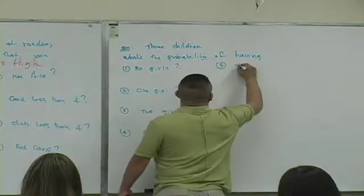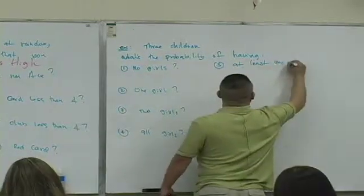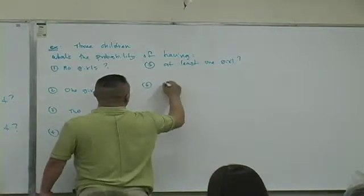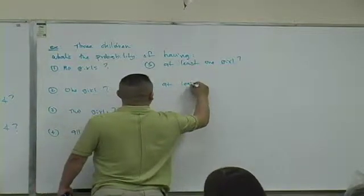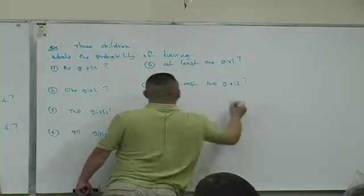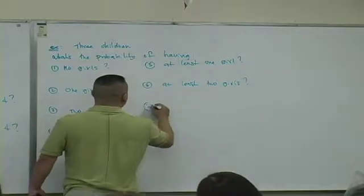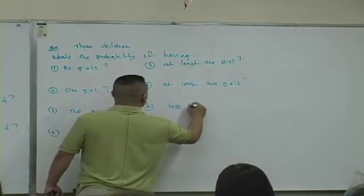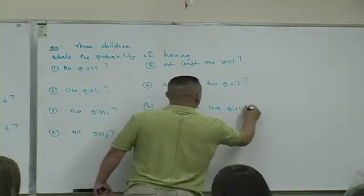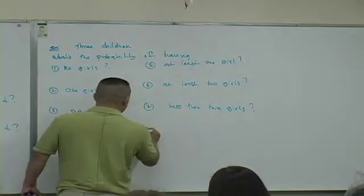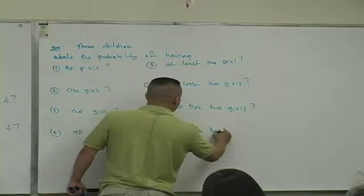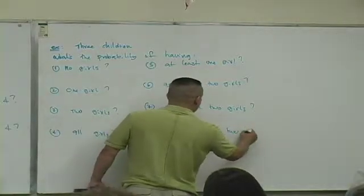Five, at least one girl. Six, at least two girls. Seven, less than two girls. Eight, no more than two girls.